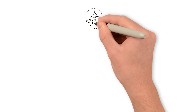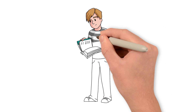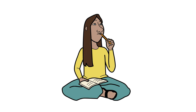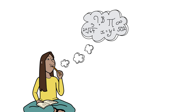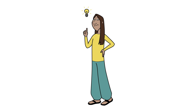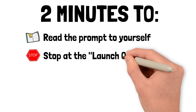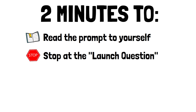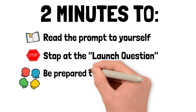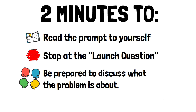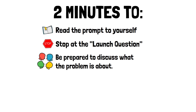Okay, juniors, it is so important that you first read the prompt carefully, and then try to figure out what the problem is even about. Don't even think about numbers yet. Just make sure you understand what's going on in this problem. I'm going to give you two minutes to read the prompt to yourself, stopping when you get to the launch question. After the two minutes is up, be prepared to discuss with a neighbor what this problem is about. Okay, are you ready? And go.